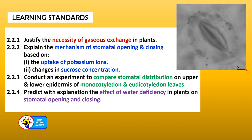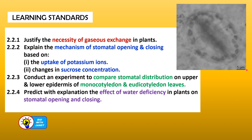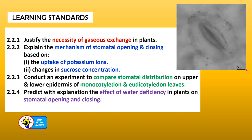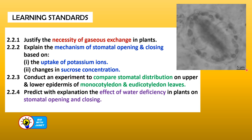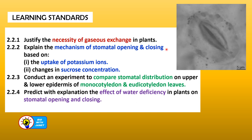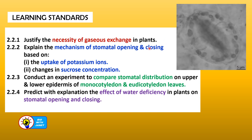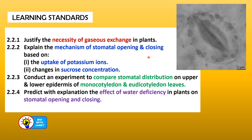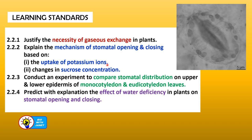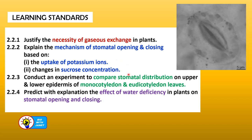Here are the learning standards. Firstly, after this lesson we should be able to explain or justify the necessity of gaseous exchange in plants — why do plants need to carry out gaseous exchange? Secondly, we should be able to explain the mechanism of stomatal opening and closing based on the uptake of potassium ions into the guard cells and changes in the sucrose concentration in the guard cells.